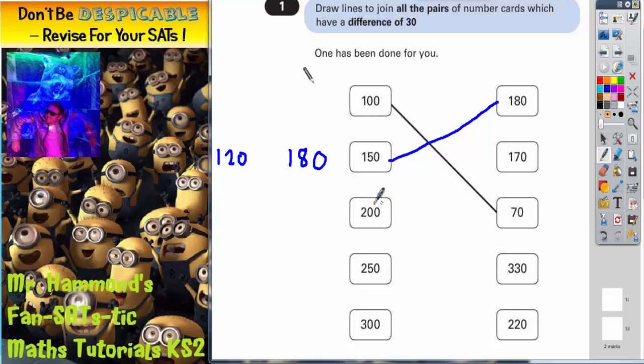Let's do a similar thing for 200. Well, 30 above would be 230 and 30 below would be 170. So we've covered both possible options of having a difference of 30 with 200. So are either of those two numbers in this list? Well yes they are. There's 170. So that must join to there.